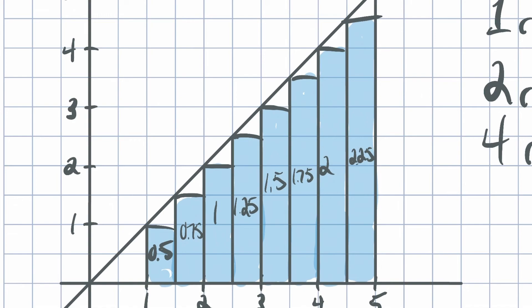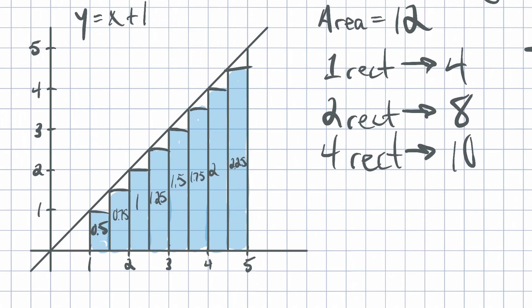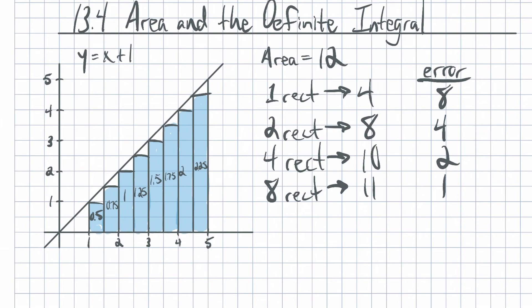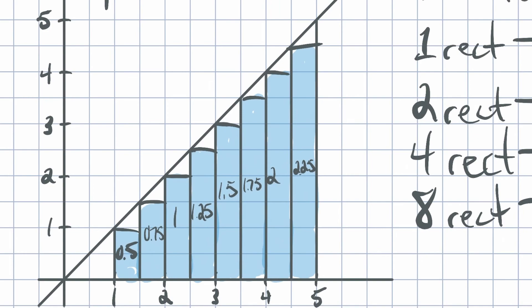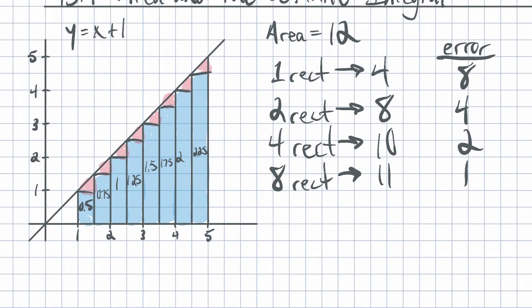We get an area estimate of 11. So with eight rectangles, the error is 1. Every time I double the number of rectangles, I cut the error in half. Each little triangle gap is half a unit by half a unit—that's a quarter unit—and each triangle is half of that, so one eighth of a unit per triangle. There are eight of them, so we're missing one whole unit of area.